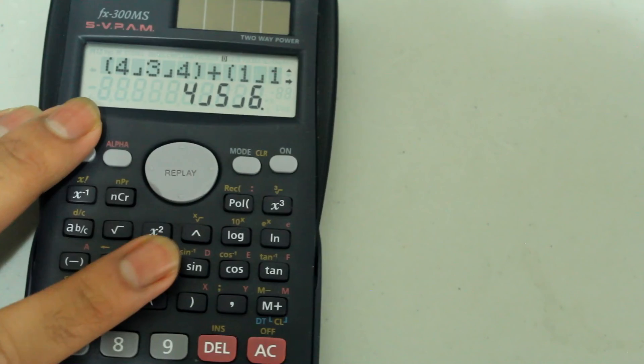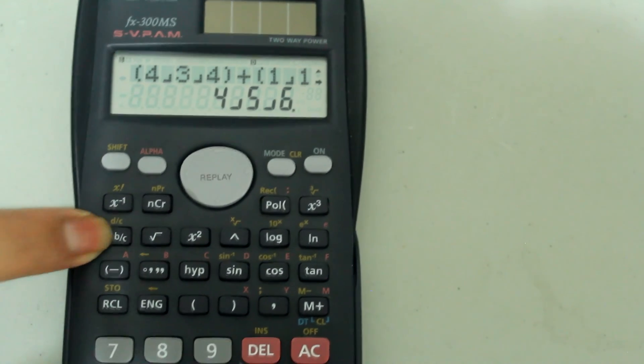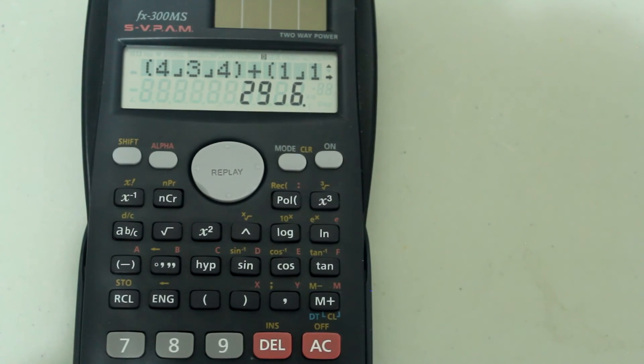it will return the answer as a mixed number, so 4 and 5 sixths, but if I want an improper fraction, shift, fraction button, and I get the improper fraction version of it.